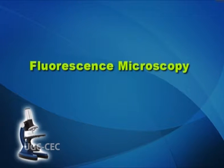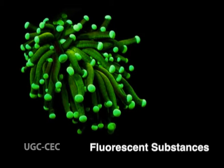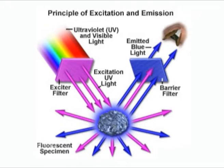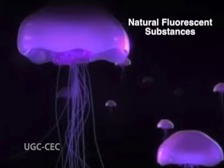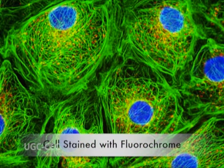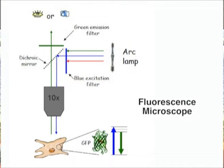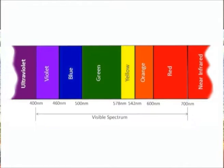Some substances have the ability to absorb light of short wavelength in the ultraviolet range and give off light at a longer wavelength in the visible light range. This phenomenon is known as fluorescence and these substances are called fluorescent. Some organisms fluoresce naturally under ultraviolet light. If the specimen does not fluoresce naturally, it is stained with a fluorescent dye called a fluorochrome. When microorganisms stained with a fluorochrome are examined under a fluorescence microscope using an ultraviolet or near-ultraviolet light source, they appear as luminescent bright objects against a dark background. The fluorochromes have special attraction for different microorganisms.